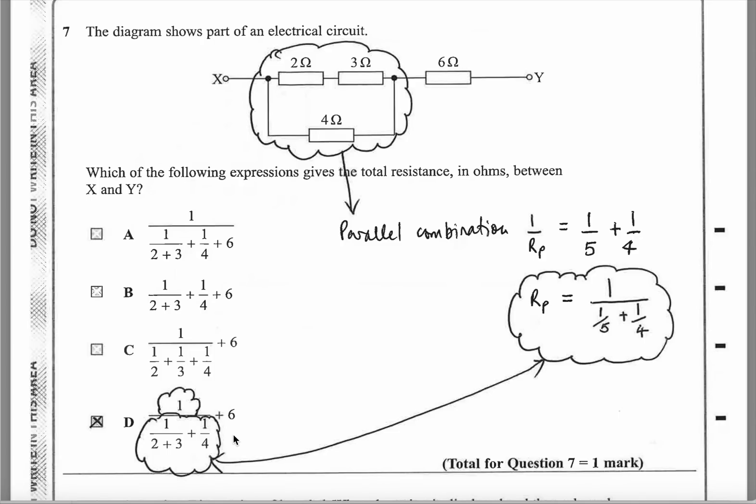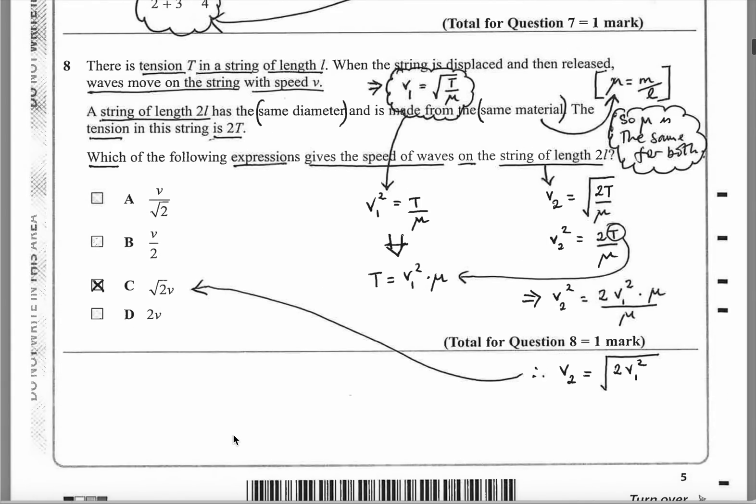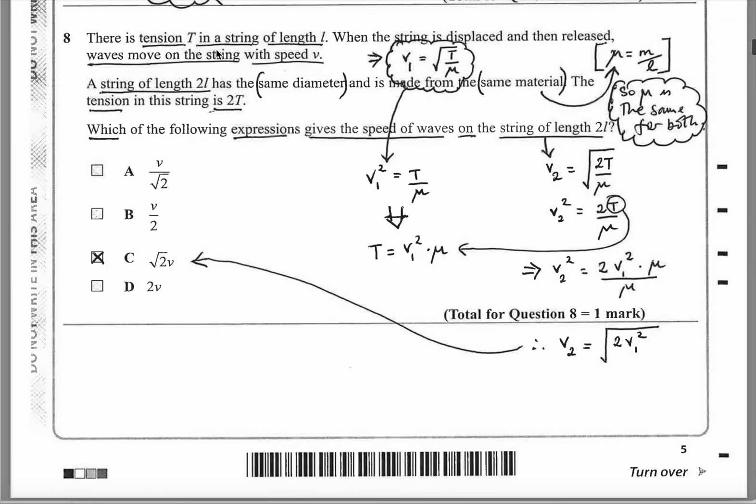Question 8 is about standing waves and the speed of waves on a piece of string. Tension in a string of length L, when the string is displaced and then released, waves move on the string with speed V. The equation at the back of your exam is V equals the square root of tension divided by mu. Mu is mass per unit length of the string. They've given you a string of length 2L and has the same frequency, same diameter, and is made from the same material. That means mu is the same for both strings, the one which is length L and the one which is length 2L. The tension is double in string 2 and the length is double.